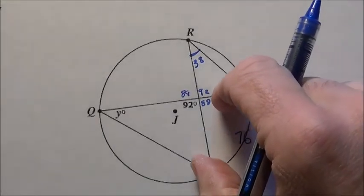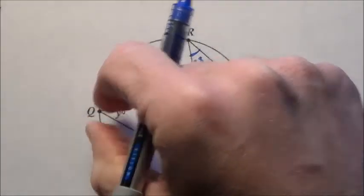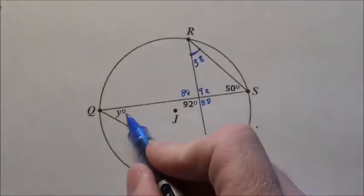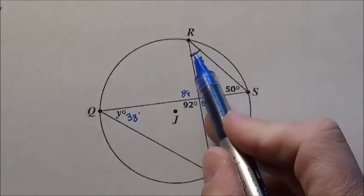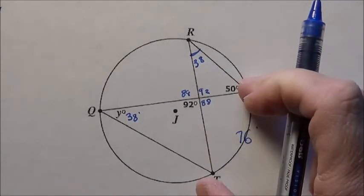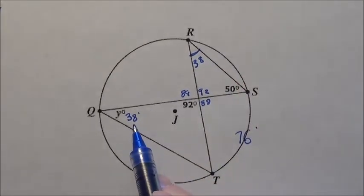But if this arc is 76, notice that this inscribed angle over here has to be half as much. It's going to be 38. This inscribed angle is the same as that one because they share this arc. That's the quickest and easiest way to get it.